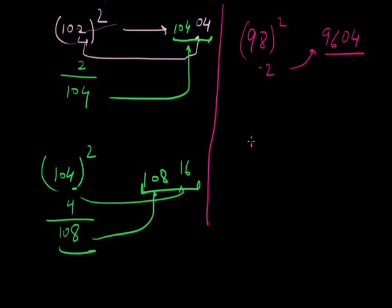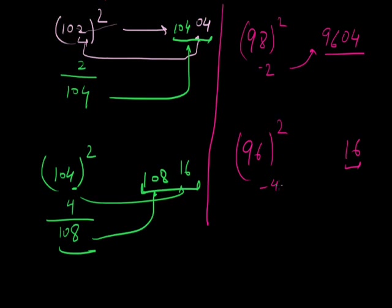Similarly, 96 squared: 96 is 4 less than 100, so 4 squared is 16 (2-digit form). Then 96 minus 4 is 92. So 96 squared is 9216. These are the squaring tricks for numbers around 100.